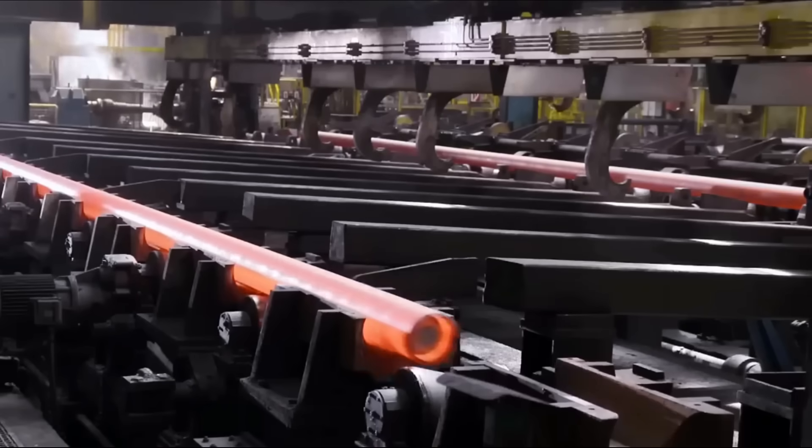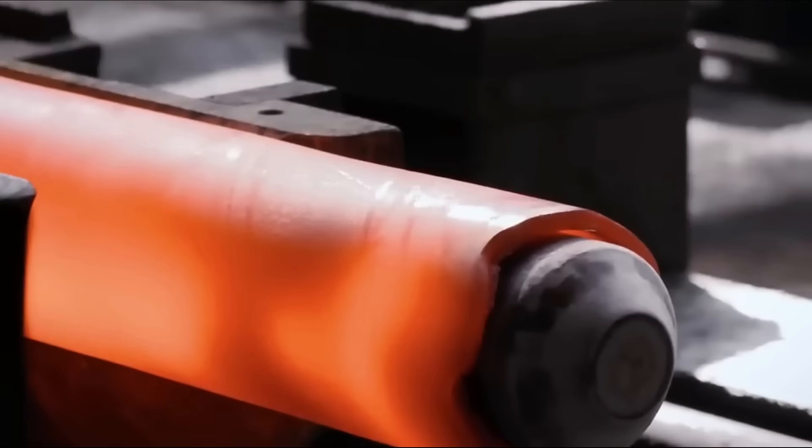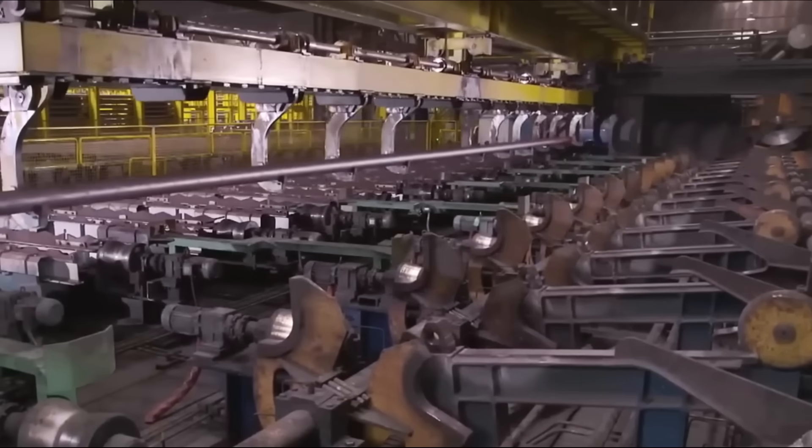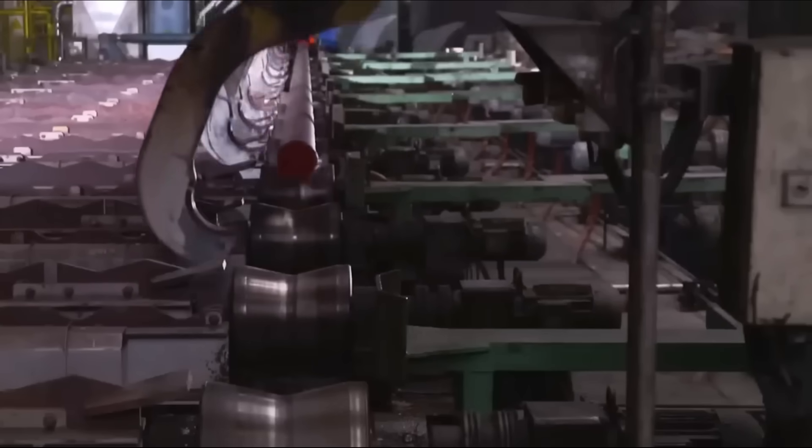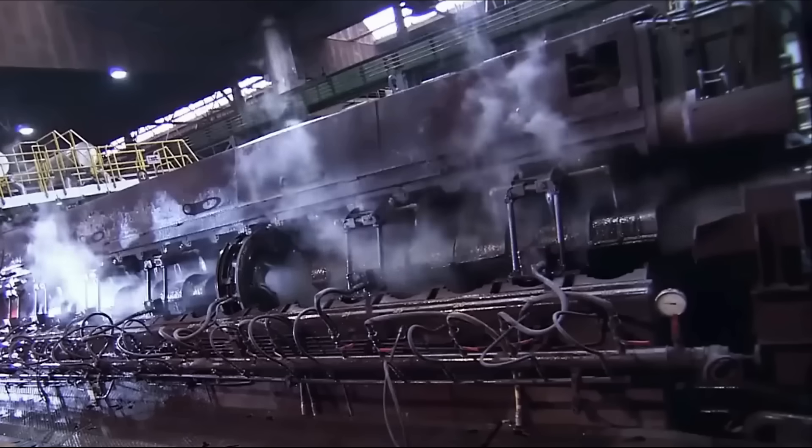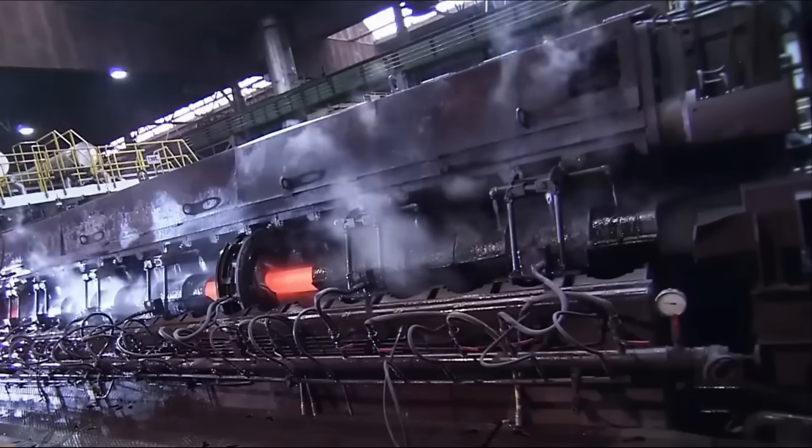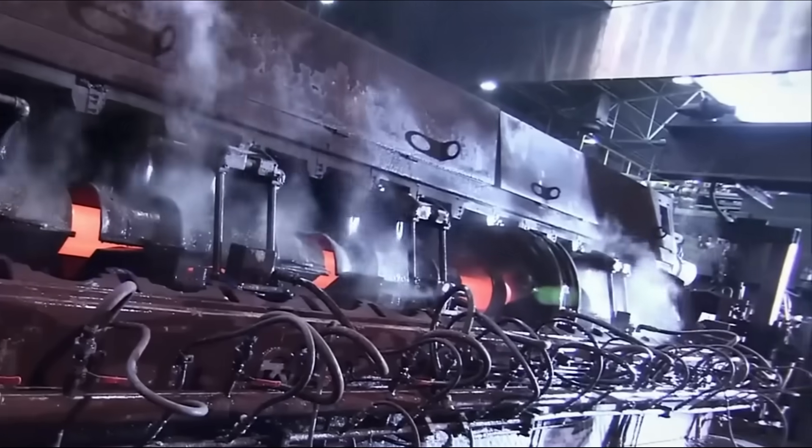Tools called mandrel bars are inserted into the tube. Then the tube with the mandrel bar is pushed through forming rollers. The process elongates the tube by decreasing its thickness and increasing its length. This process elongates the tube up to 17 times of its original length.